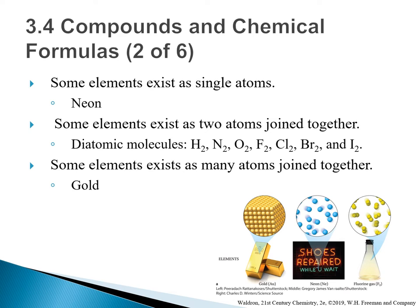Majority of the elements exist as single atoms, such as neon. Some elements exist as two atoms joined together — they are called diatomic molecules. There are seven of them in nature: hydrogen, nitrogen, oxygen, fluorine, chlorine, bromine, and iodine.